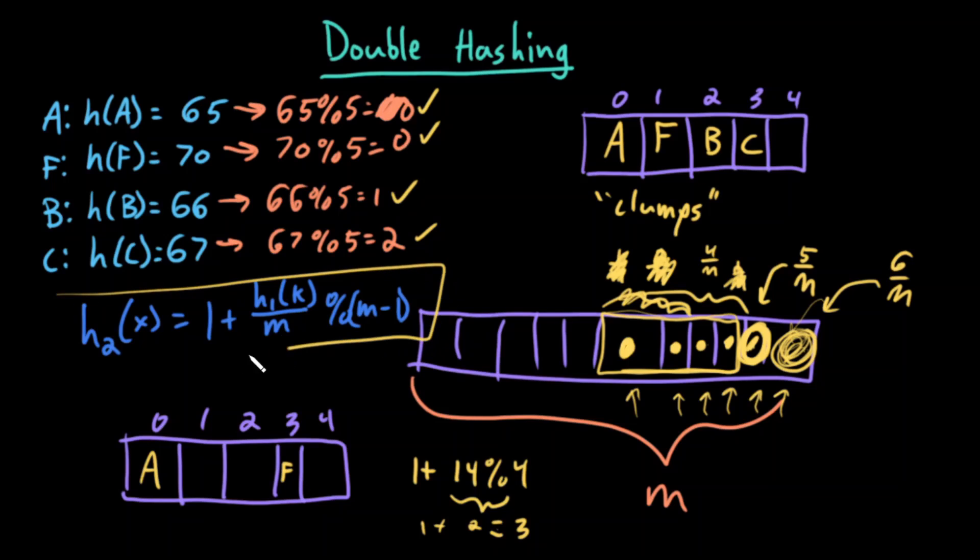This second hash function is deterministic. I happen to choose this one - this happens to be a common one that is used. You could theoretically use any secondary hash function. You just want to make sure that you get a pretty random spread of skips. Each element should have a different skip, ideally. A was inserted, F was inserted. Now for B.